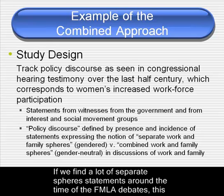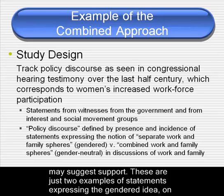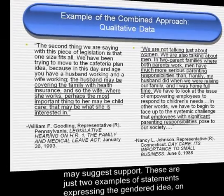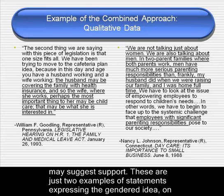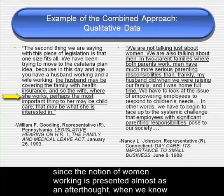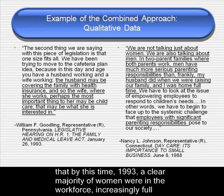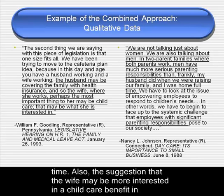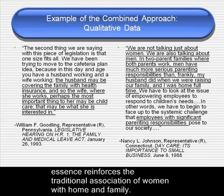If we find a lot of separate sphere statements around the time of the FMLA debates, this may suggest support. These are just two examples of statements expressing the gendered idea on the left side and the gender-neutral idea on the right side. This language seems gendered since the notion of women working is presented almost as an afterthought, when we know that by this time — 1993 — a clear majority of women were in the workforce, increasingly full-time. Also, the suggestion that the wife may be more interested in a childcare benefit in essence reinforces the traditional association of women with home and family.